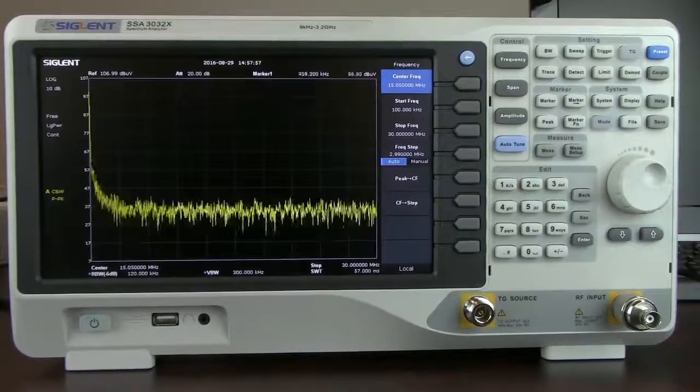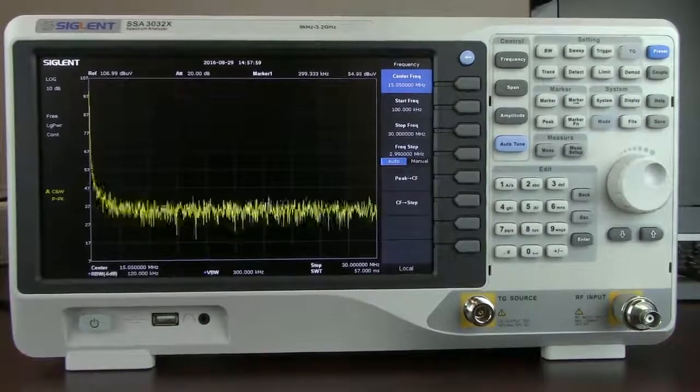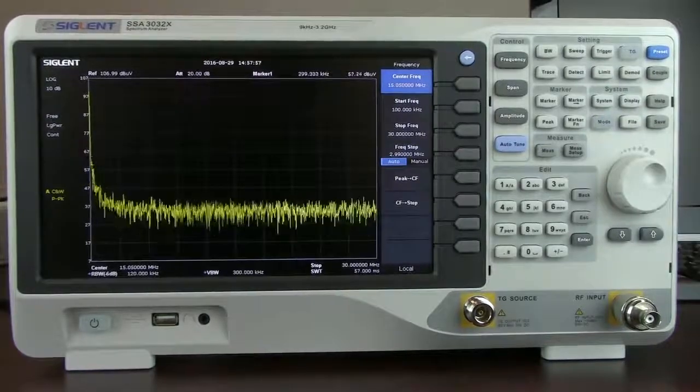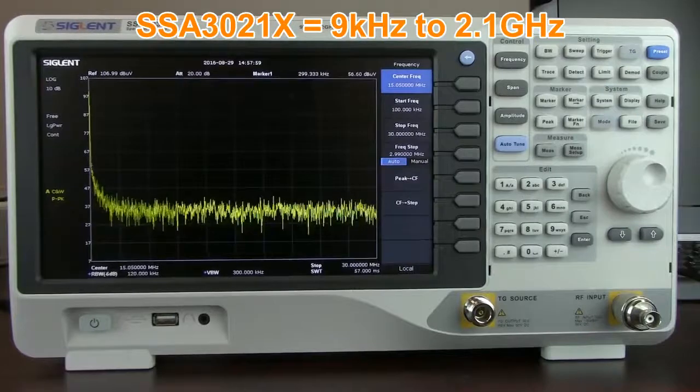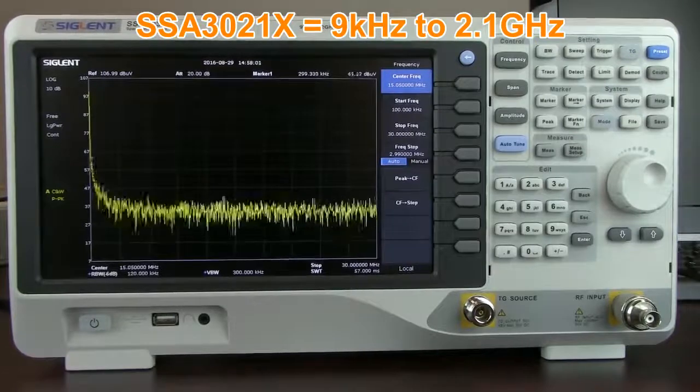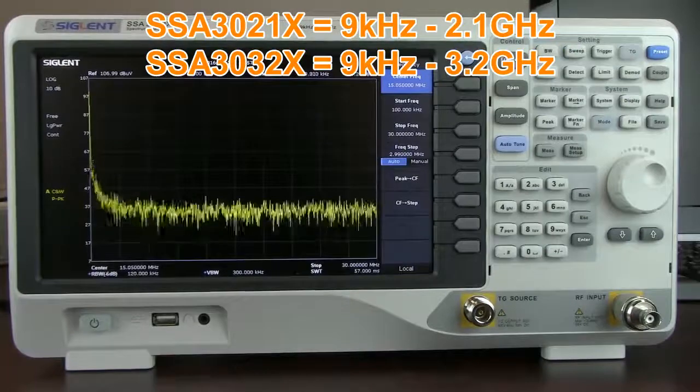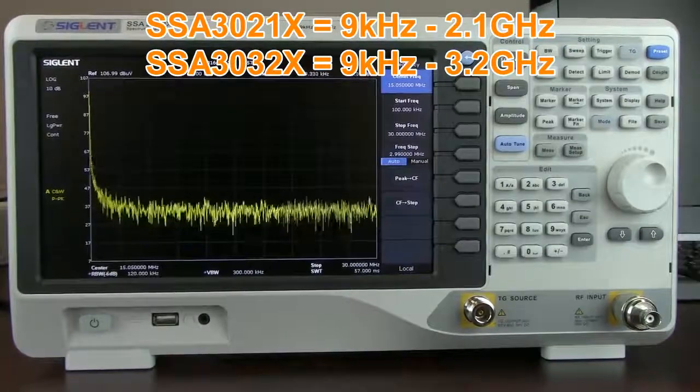In this video we're going to highlight some of the reasons why the SSA 3000X has become so popular. There are currently two models available. The SSA 3021X operates from 9 kHz to 2.1 GHz and the SSA 3032X operates from 9 kHz to 3.2 GHz.